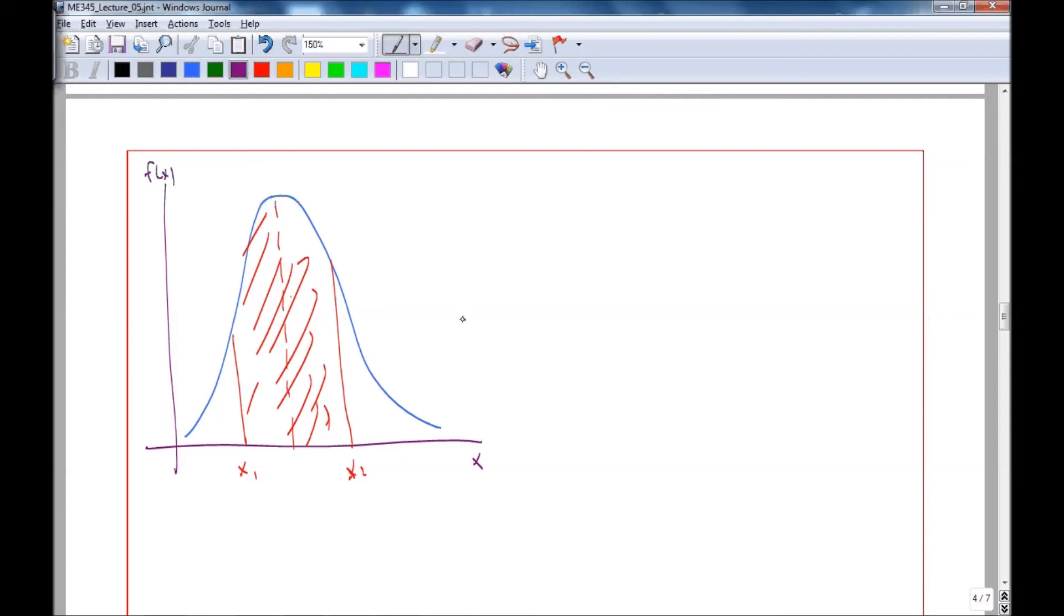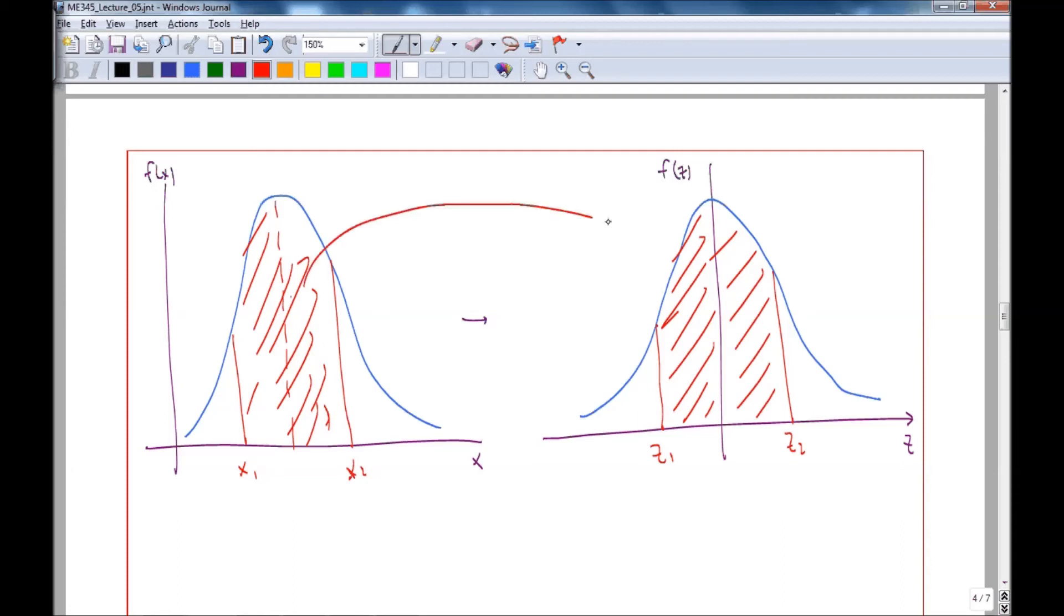When we transform to f of z, again, it's random errors. So this is the Gaussian that we're interested in. And now our z1 is here. And our z2 is here. And the area we want is the area inside, which, as I stated before, is the same as this area. So these areas are equal.